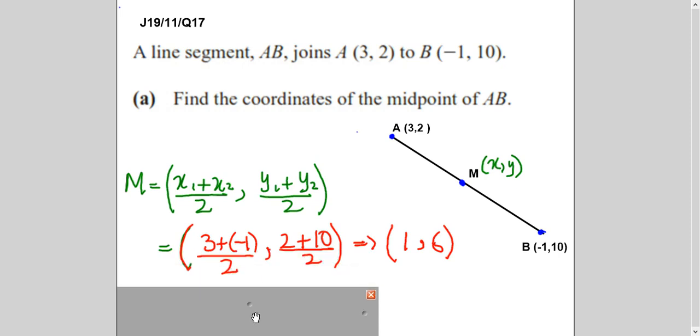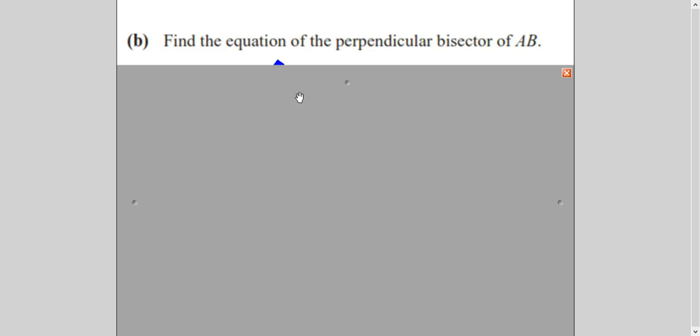So, the x-coordinate is 3 in point A and minus 1 in point B. So I am adding them up and divide it by 2. Similarly, I am adding up y-coordinates of the two points and then divide it by 2. So the coordinates of the midpoint are (1,6). I hope it is clear. So we just have to remember this formula. Add the x-coordinate divided by 2. Add the y-coordinate divided by 2.